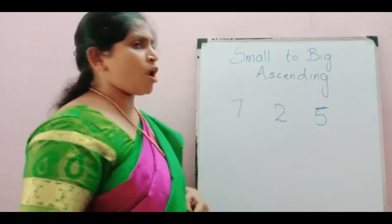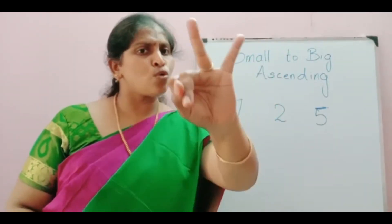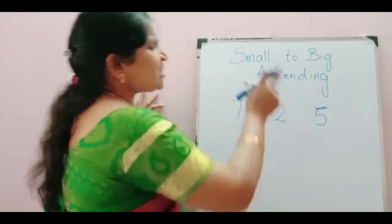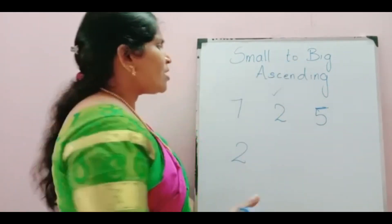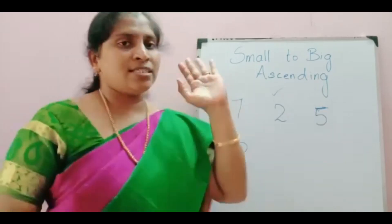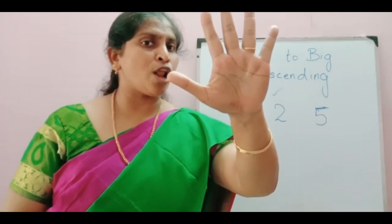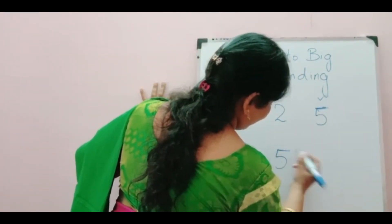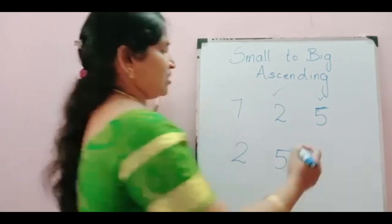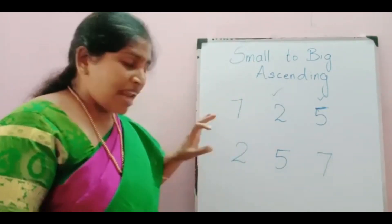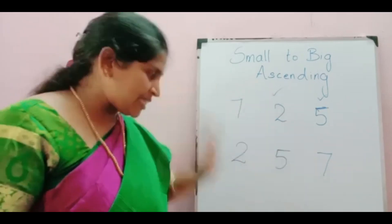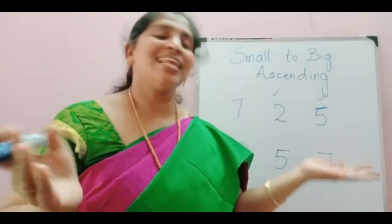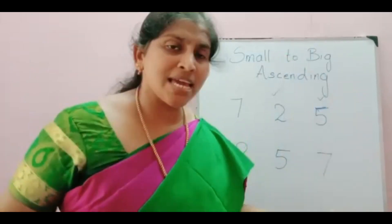Now, don't look at 2. See the other two numbers: 7 and 5. Which is smaller? Good — 5. So write 5 next. The last one left is 7, so write 7. We arranged them small to big. Ascending means small to big — it is the same concept, just a new name.